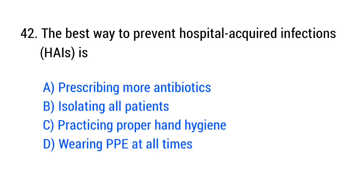Question No. 42. The best way to prevent hospital-acquired infection is? The right answer is Option C: Practicing proper hand hygiene.